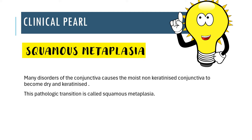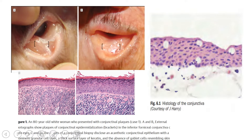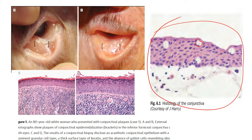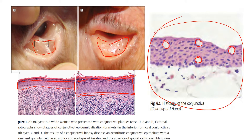An important clinical pearl: the skin is dry and keratinized, but the conjunctiva has non-keratinized stratified squamous epithelium to allow eye movement and contribute to tear film secretion. In many disorders, this moist non-keratinized conjunctiva is converted to a dry keratinized epithelium — this pathological transition is called squamous metaplasia. In normal histology you can see goblet cells filled with mucin, but in squamous metaplasia there is thickening, keratinization, and acanthotic changes in the conjunctival epithelium, and no goblet cells are present.